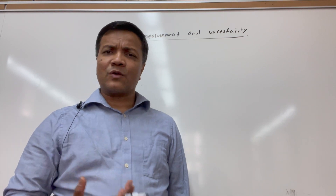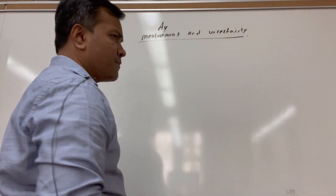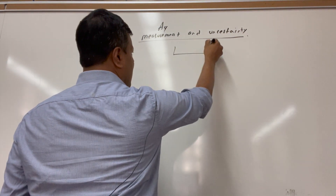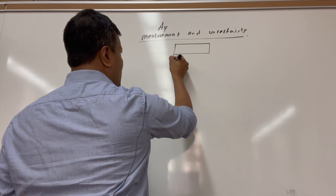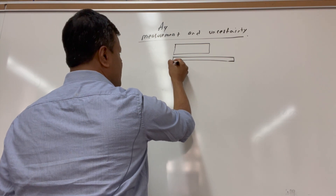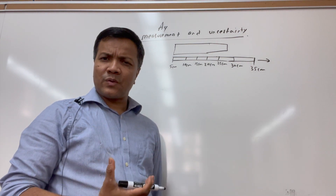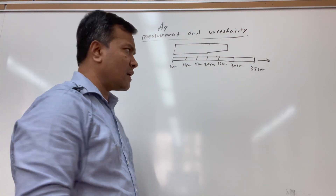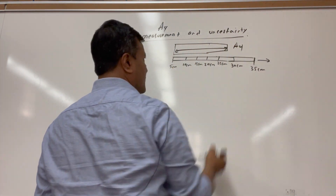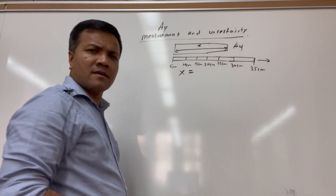Today we're going to consider an A4 paper. We're going to find the longest side of the A4 paper. So if you have an A4 paper and we put a ruler on it, we're going to find the longest side. Now, what is the true value of the longest side of A4 paper? You can call it x. So what is x?